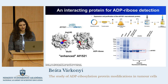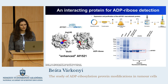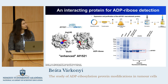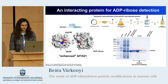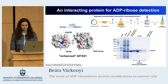To detect ADP ribose, we chose to use an interacting protein called AF1521 macrodomain. This can bind to both poly and mono ADP ribose. This protein underwent two amino acid substitutions by site-directed mutagenesis, which enhanced its ability to bind to ADP ribose. Hence, we call this enhanced AF1521, or EAF1521.